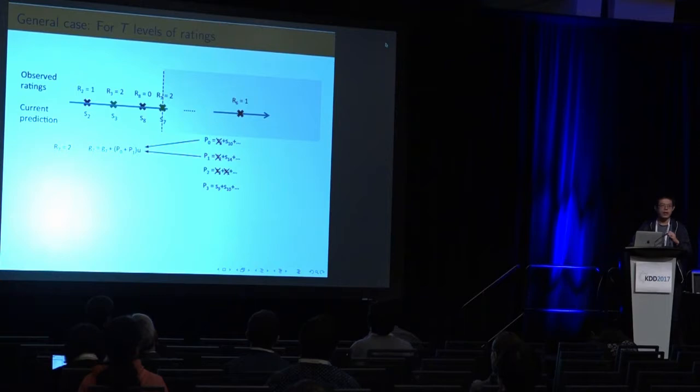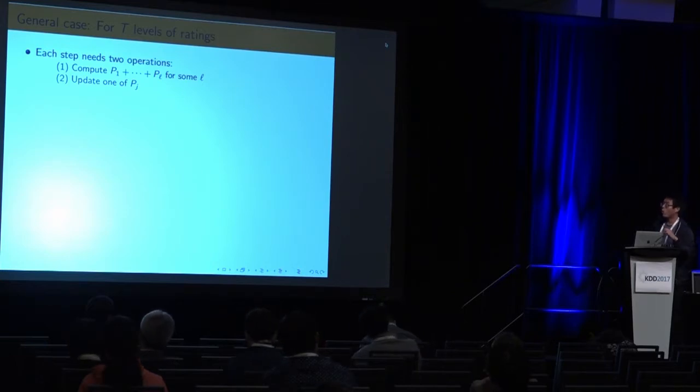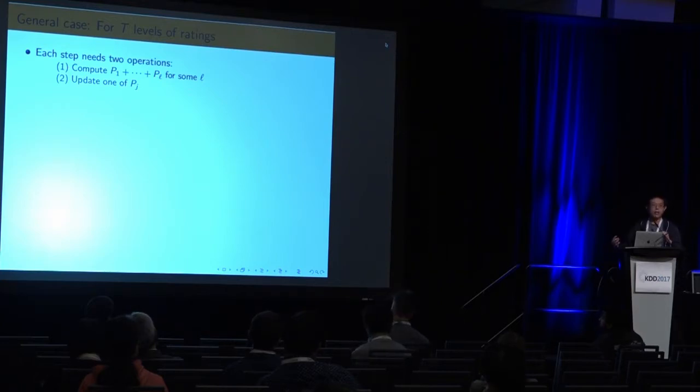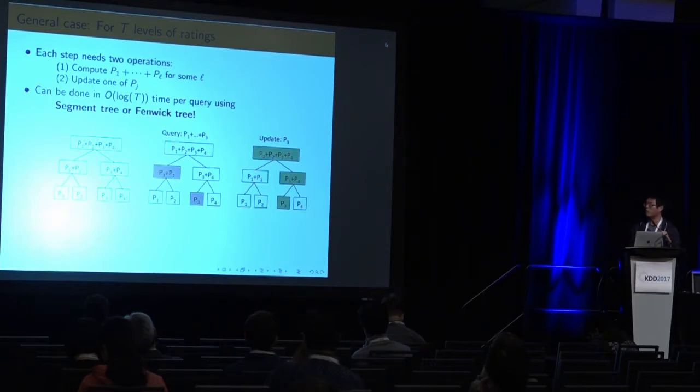This may sound very expensive. If I have a lot of t levels of ratings, why doesn't t appear in my time complexity formula? This is because when I do a linear scan, I need two operations each step. One is compute, it's doing a prefix sum. And then you need to update one of the prefix sum. Both operations can be done very efficiently. This can be done in a log of t time, and t is really smaller or less than the d2 bar. We don't have a t in the time complexity formula. We're using the segment tree or Fenwick tree for this one.